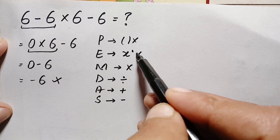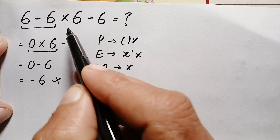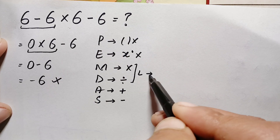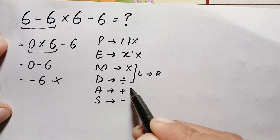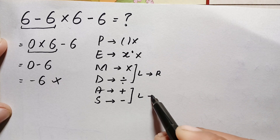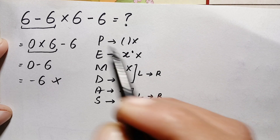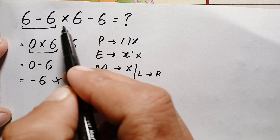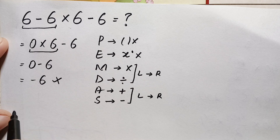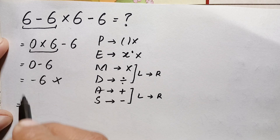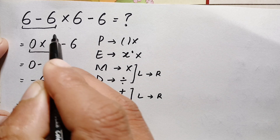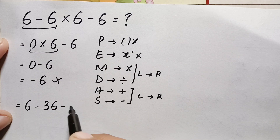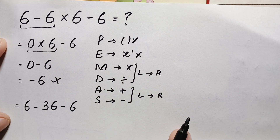In this problem, we have no parenthesis, no exponents, but there is multiplication. So we have to follow multiplication and division from left to right, and also addition and subtraction from left to right. Looking at the problem, we have multiplication, so first we do 6 times 6, which is 36. This gives us 6 minus 36 minus 6.